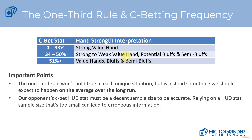If we ratchet it up a little more — if somebody is c-betting 51% or greater — that tells us that they're definitely going to have value hands within their range, but they're also going to be bluffing with pure bluffs and semi-bluffs. So anything above 33% of the time typically means that they're c-betting more than just strong value hands.